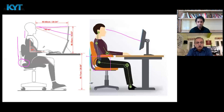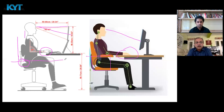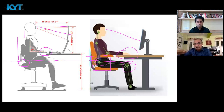Your wrist should not be touching anything for support when you are typing. When not typing they can rest, but the moment you start typing they should be floating in the air. The hip joint and knee joint should not be at the same level — that will lead to arthritis. The knee joint should be at a slightly lower level than the hip joint.